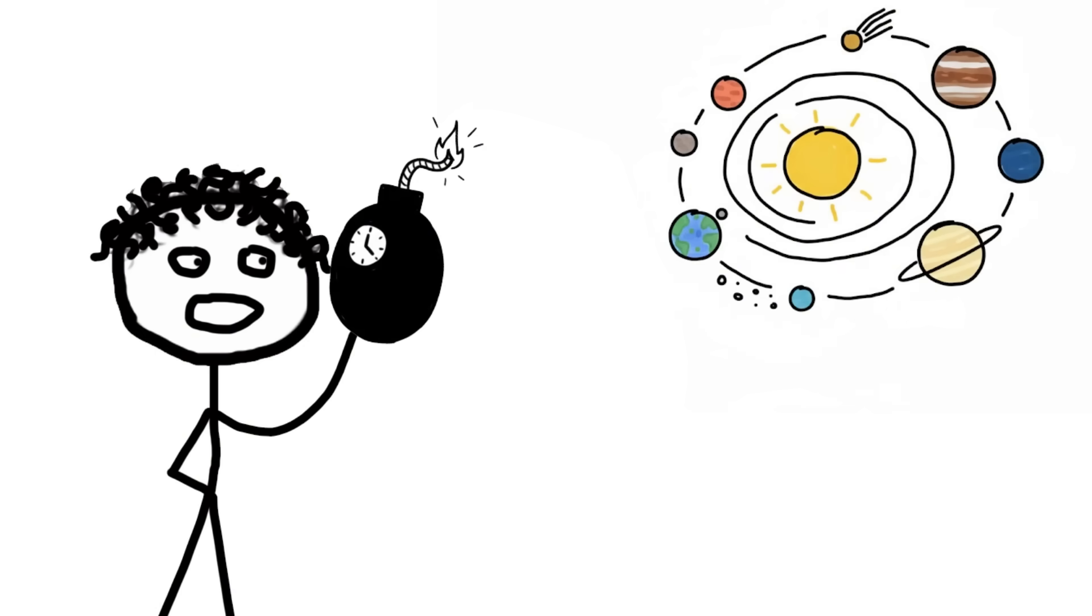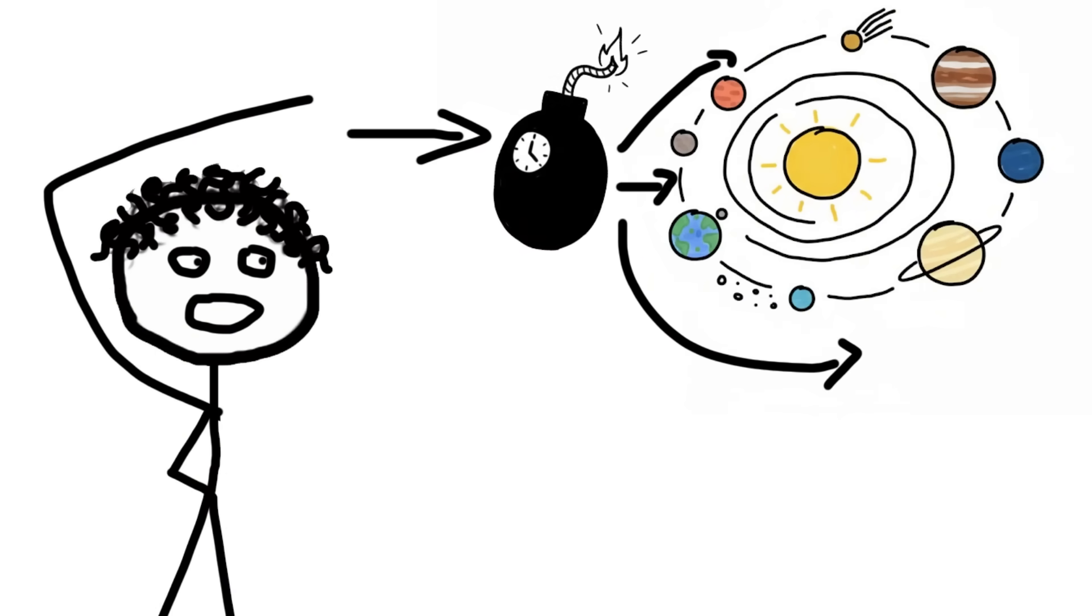It's a vast dormant ticking time bomb, waiting for a passing ghost star to slightly misalign its gravity and fling a planet-killer ice ball at us. We are quite literally surrounded by potential extinction.